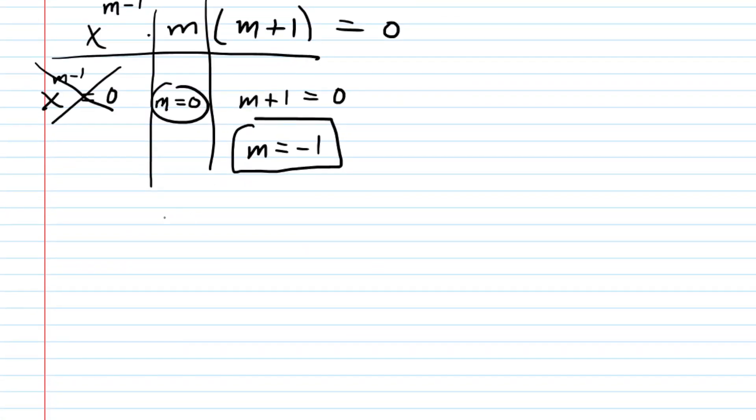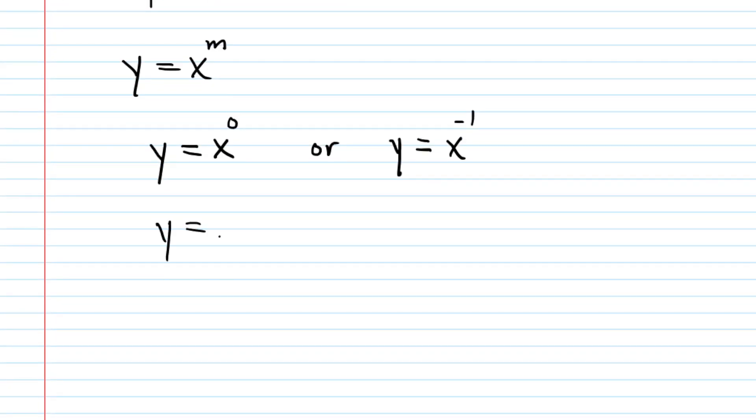We're done with the problem. Recall that the original form of our power function was x to the power of m. Therefore, two solutions of that form to this differential equation will be y equals x to the power of zero, or y equals x to the power of negative one. We could simplify: x to the power of zero is just one. So our final answers are y equals one or y equals x to the power of negative one. These are two solutions of the form y equals x to the power of m that satisfy the given differential equation.